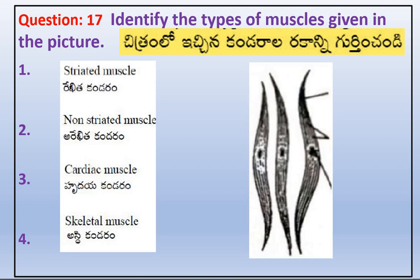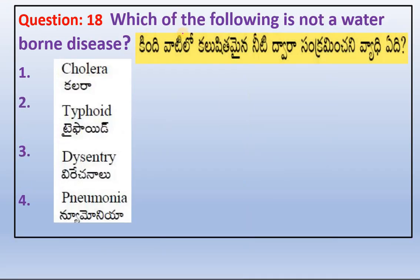Identify the types of muscles given in the picture. The answer is non-striated muscles. Which of the following is not a water-borne disease? The correct answer is pneumonia.